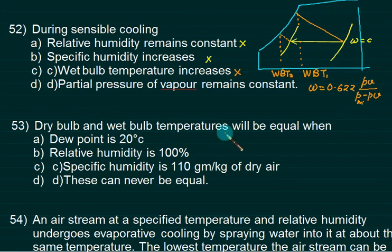Now, dry bulb and wet bulb temperatures will be equal when RH is 100%. If you are on this line of 100%, then for this point here, the dry bulb is same as wet bulb, same as dew point.